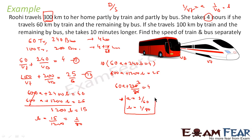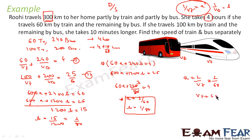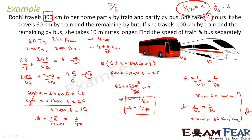Since a = 1/Vt = 1/60, we get Vt = 60 km/h. Since b = 1/Vb = 1/80, we get Vb = 80 km/h. The speed of the train is 60 km/h and the speed of the bus is 80 km/h. That is our answer.